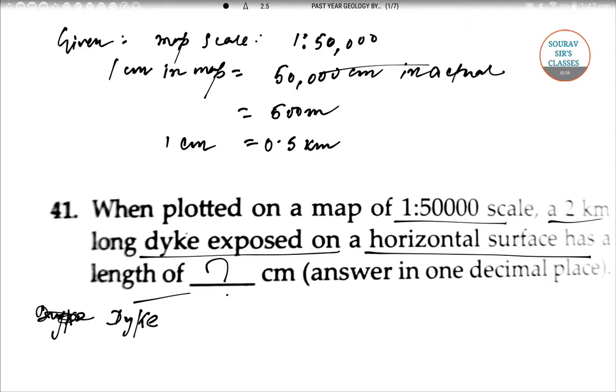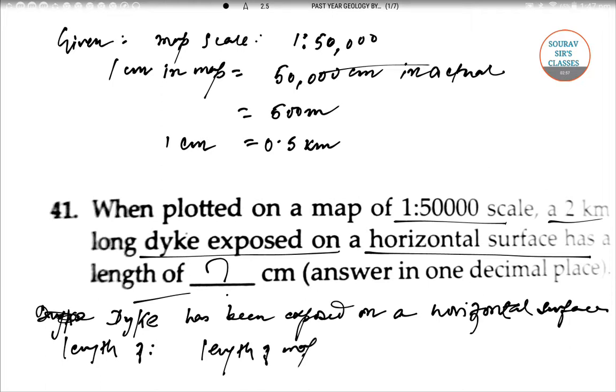The dyke exposed on a horizontal surface has a length on map equal to 2 divided by 0.5 kilometers, that equals 4 centimeter. The correct answer is 4 centimeter. Let's move to next question.